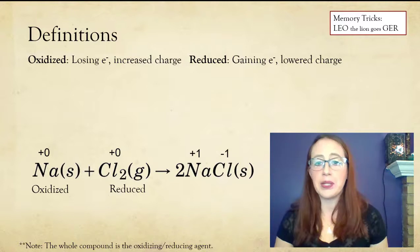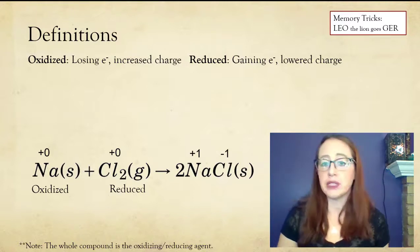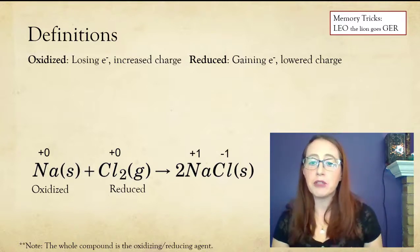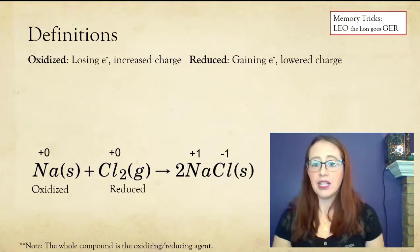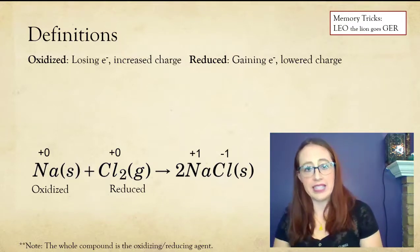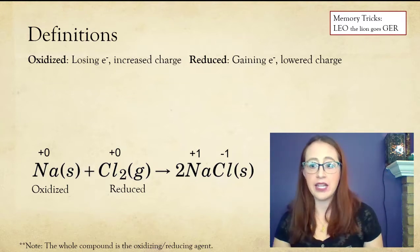Generally, we talk about individual elements being oxidized or reduced. And then the memory trick to help with this is Leo the lion goes GER, being loss of electrons is oxidation, L-E-O, and G-E-R, gain of electrons is reduction.